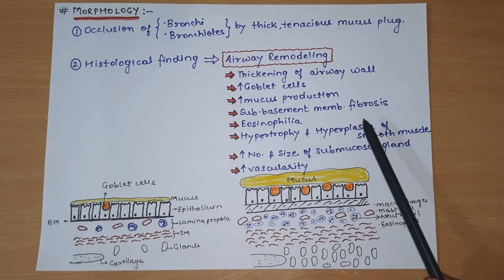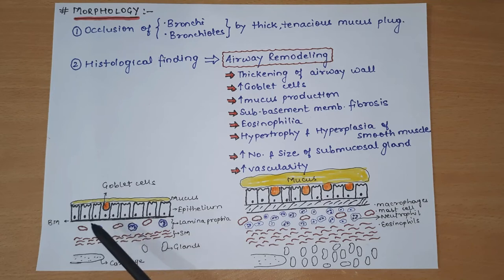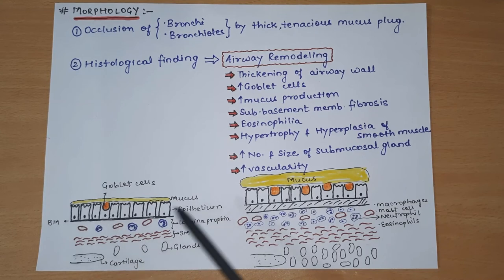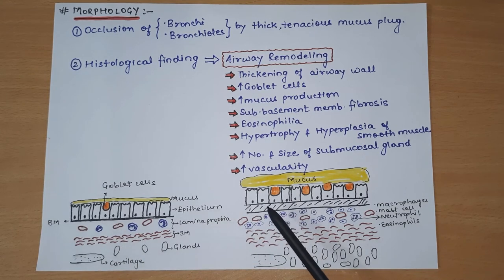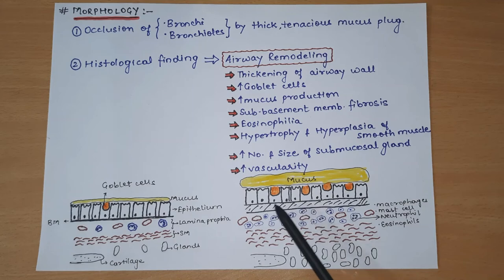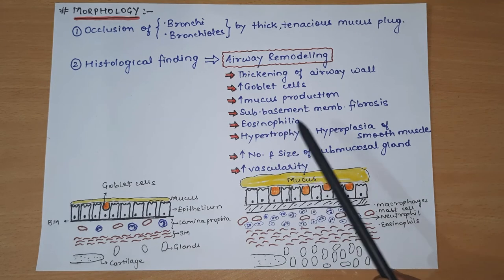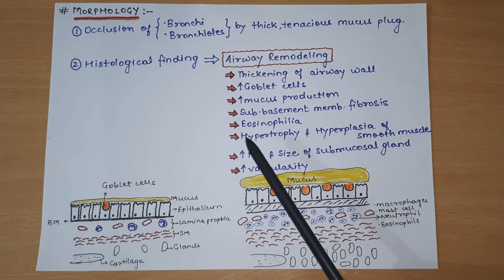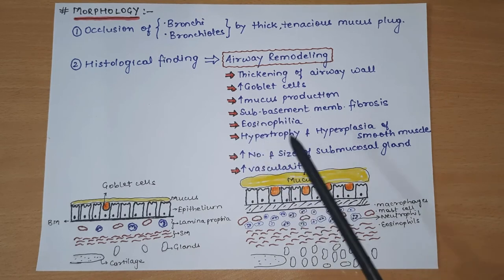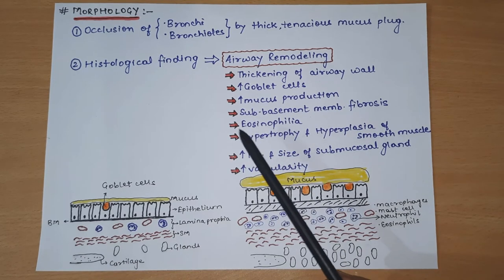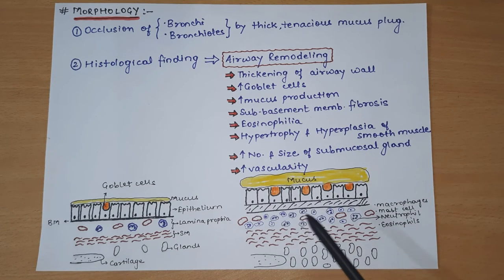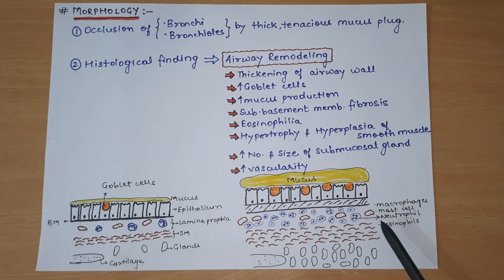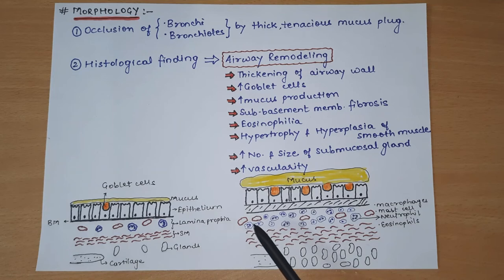Next feature of the remodeled airway is sub-basement membrane fibrosis - normally there is a thin basement membrane just below the epithelium, but in the remodeled airway, fibrosis develops in this basement membrane, causing sub-basement membrane fibrosis. Next is eosinophilia - in the lamina propria, infiltration of eosinophils along with macrophages, mast cells, and neutrophils is greatly increased.